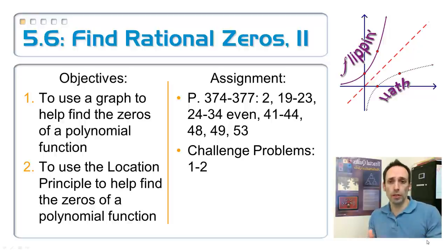We come up with a list of possibilities, and then we check them with synthetic division. So here we're learning a couple of ways to cheat, a couple of ways to slim down that list. That list can get pretty long. Where are we supposed to start? That's what we're trying to find out.